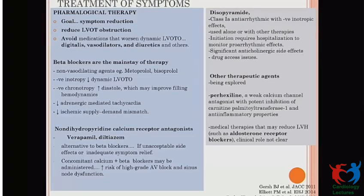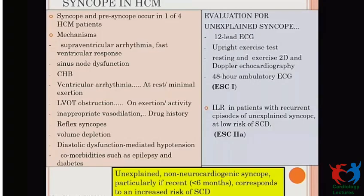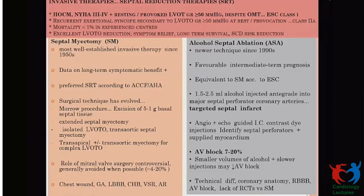Beta-blockers are the mainstay for symptom management. Non-dihydropyridine CCBs can be added, with increased risk of heart block. Disopyramide is an alternative if these two fail and can be used as an adjunct. Newer drugs such as perhexiline and aldosterone receptor blockers have a non-conclusive role. For syncope in HCM, other causes like bradyarrhythmias and reflex syncope should be investigated with 24–48 hour Holter monitoring, and an implantable loop recorder has a role if routine investigations fail to document arrhythmia.